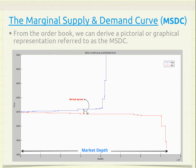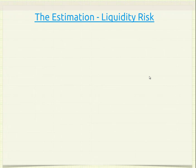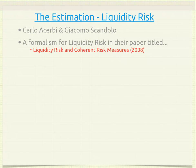From the order book we can derive the marginal supply and demand curve, which shows the bid-ask spread and market depth. Moving toward the y-axis, we see a convergence showing that prices from the ask side decrease and prices from the bid side increase toward an almost meeting point. A more linearized form of the marginal supply demand curve shows the ask and the bid. To estimate liquidity risk, we employ the formalism of Acerbi, Scandolo in their 2008 work on liquidity risk.